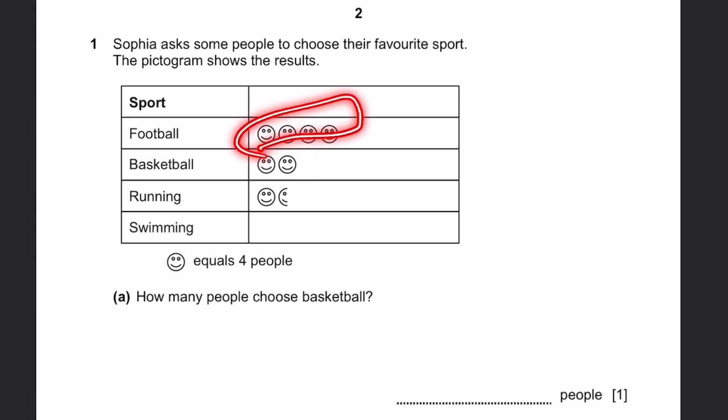Football, 4 smileys. Basketball, 2 smileys. Running, 1.5. Swimming is not given. One smiley equals 4 people. Part A: How many people chose basketball? So it's 2 smileys and 1 equals 4 people. So 2 into 4, which is equal to 8.